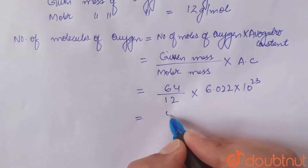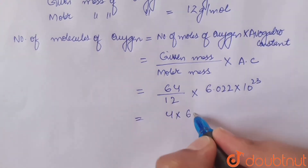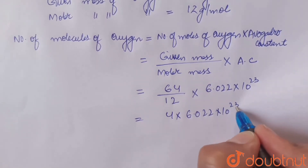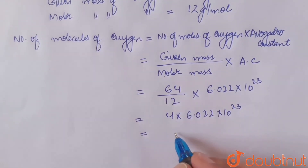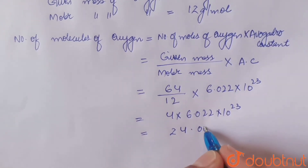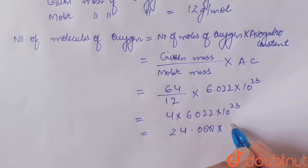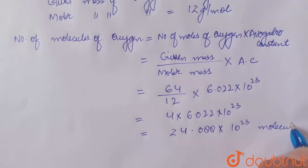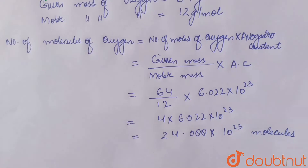That equals 4 multiplied by 6.022 × 10²³, which equals 24.088 × 10²³ molecules. Thus, the number of molecules in 64 grams of oxygen equals 24.088 × 10²³ molecules.